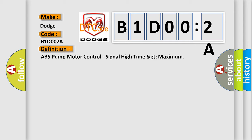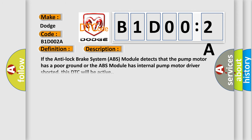And now this is a short description of this DTC code. If the anti-lock brake system ABS module detects that the pump motor has a poor ground or the ABS module has internal pump motor driver shorted, this DTC will be active.